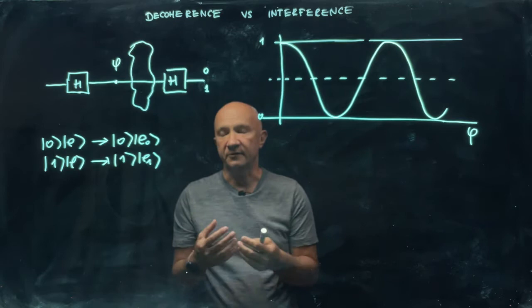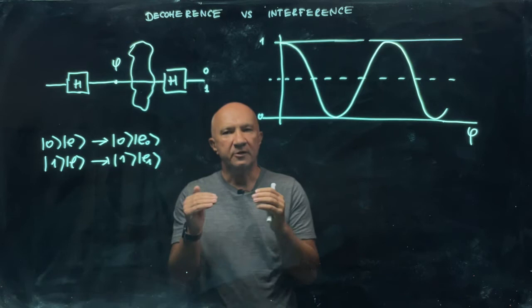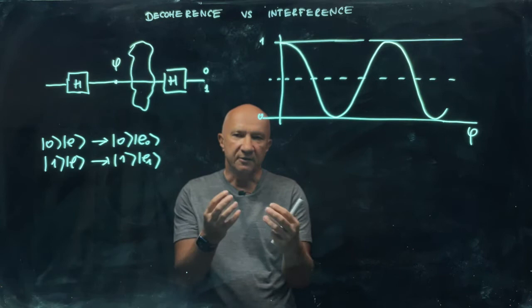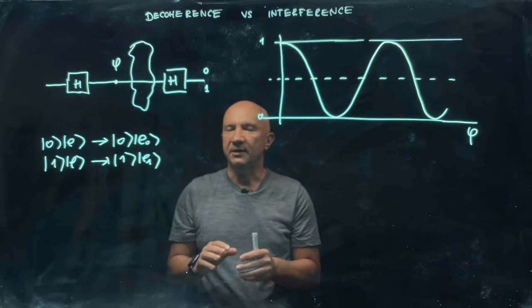So let us start with a very simple example of decoherence versus interference. We know that the power of quantum computation is in quantum interference. So now I want to show you, using a very simple example of a single qubit interference, how decoherence kills quantum interference.